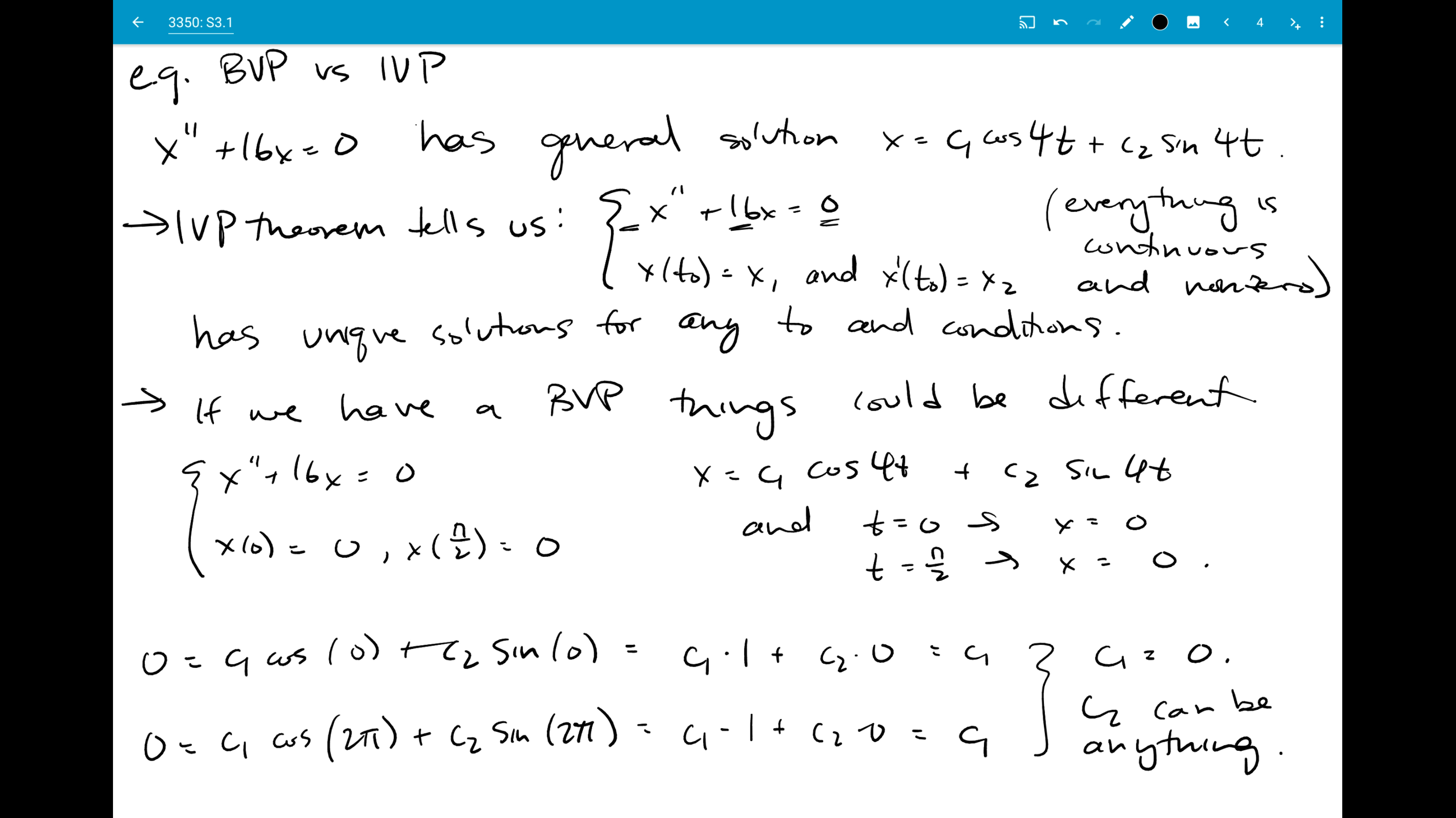So what I have here is that I don't have a unique solution because I could pick anything for c2. x equals cosine 4t times 0 plus anything times sine 4t is fine. So sine 4t, x equals 1,000 sine 4t, anything you want. My problem here is that that's not unique, even though my initial value problem would be guaranteed to have a unique solution.